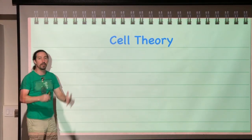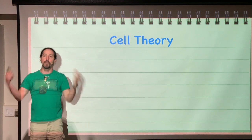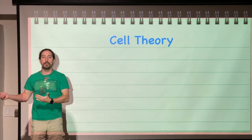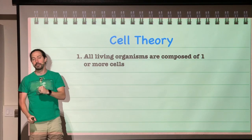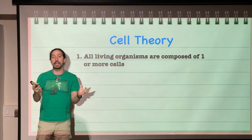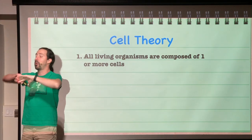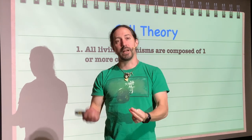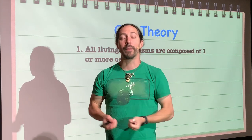Cell theory has three specific parts. The first part is one you should already be very well aware of: all life is composed of one or more cells. All of life, wherever it is, is made up of cells. There is not a single thing alive that is not made of cells.